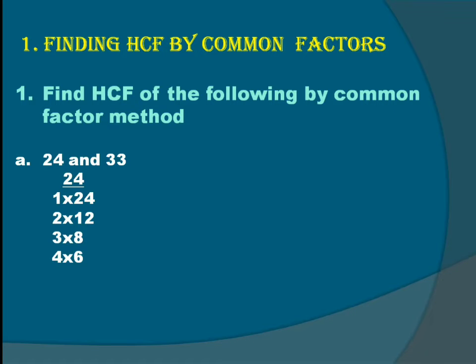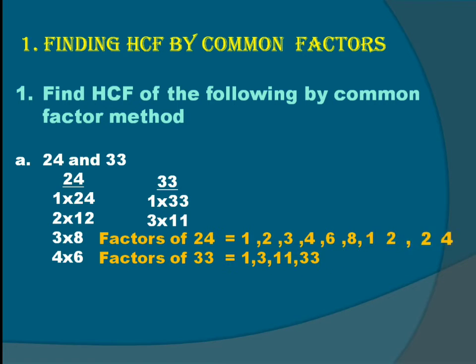4×6 = 24. Now 33: 1×33 and 3×11. Factors of 24 is equal to 1, 2, 3, 4, 6, 8, 12, and 24. Factors of 33: 1, 3, 11, 33. The common factors of 24